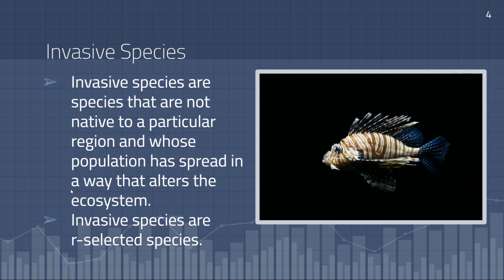You should also be familiar with the term invasive species. Invasive species are species that are not native to a particular region, yet their population has spread in a way that alters the ecosystem. The lionfish is a notorious invasive species found in the Gulf Coast of Florida — its population has been able to explode largely because it doesn't really have any predators in its ecosystem. Invasive species are often also R-selected species, because producing so many offspring makes them more successful at spreading and altering the ecosystem, which is typically very bad for native plants and animals.